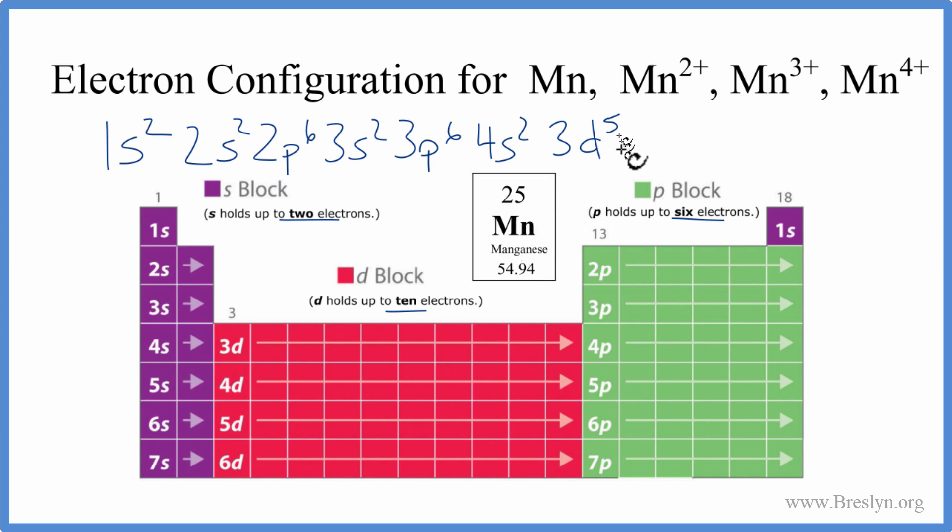So that's the electron configuration for the neutral manganese atom. You'll also see it written with the 4s2 after the 3d5. I prefer this notation because it shows you the order in which the electrons are removed. So the 4s will be removed when it forms ions, like these ions up here, before the 3ds. Both notations show you the correct orbitals, it's just the order that's a little different.